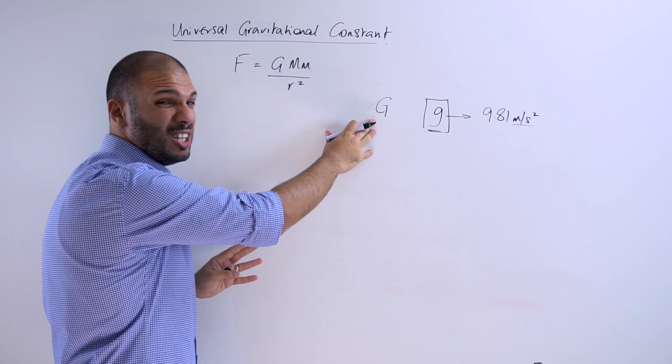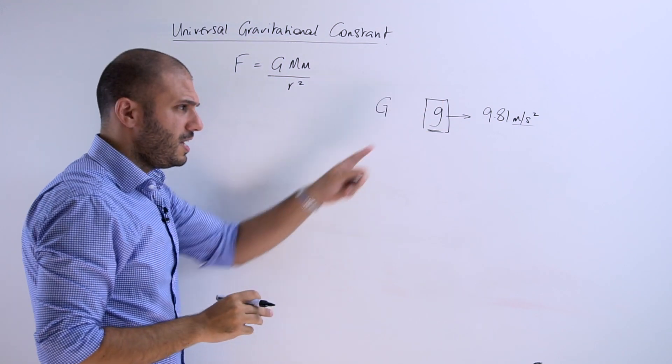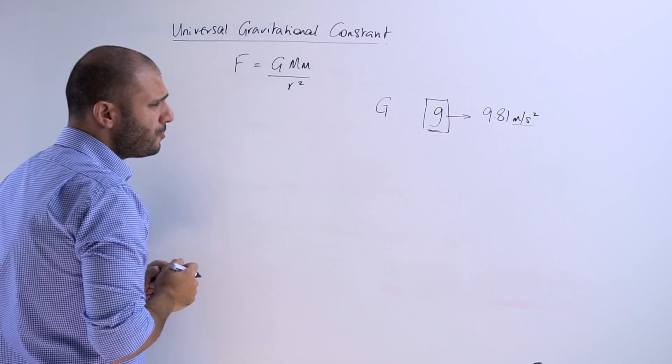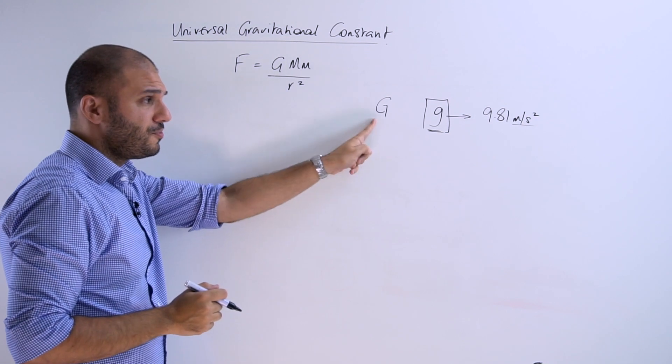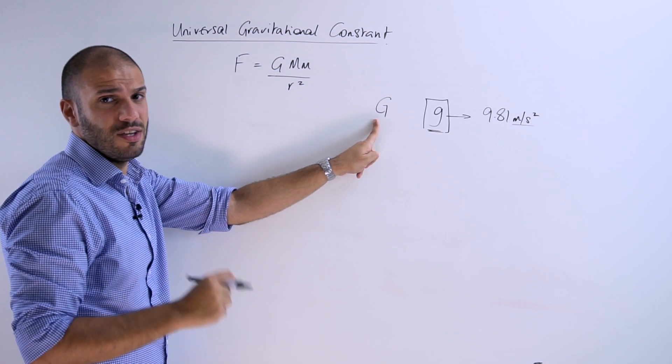This gravitational constant has very different units than the acceleration due to gravity. And the first thing I'd like to do is to find its SI units.